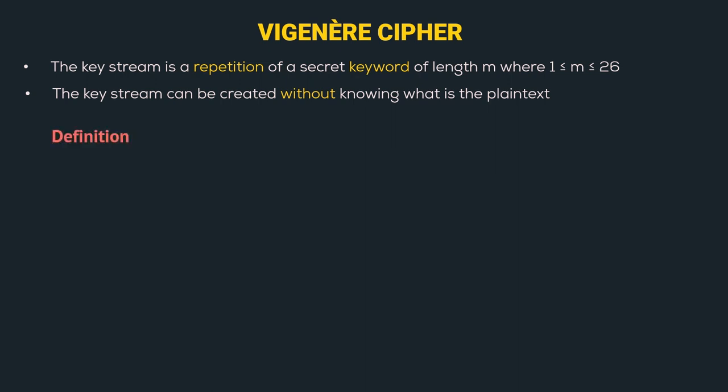Let's look at the mathematical definition of the Vigenère Cipher. The plain text is represented by P1, P2, P3, and so on, and the domain of the plain text is Z26. Similarly, the cipher text is represented as C1, C2, C3, and so on, and the domain is also Z26.